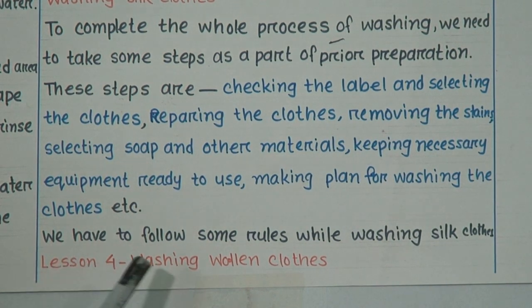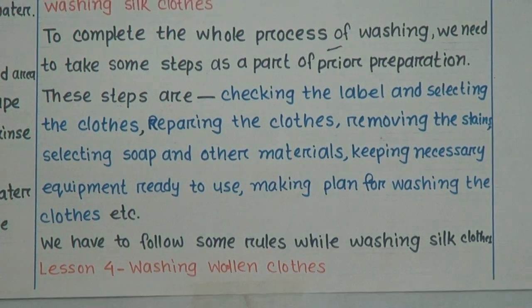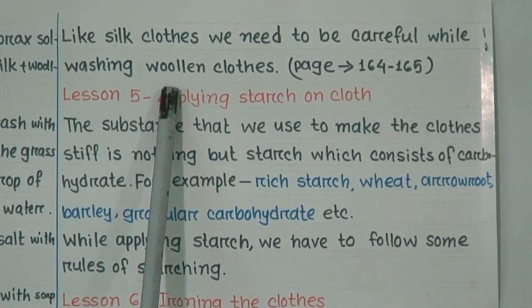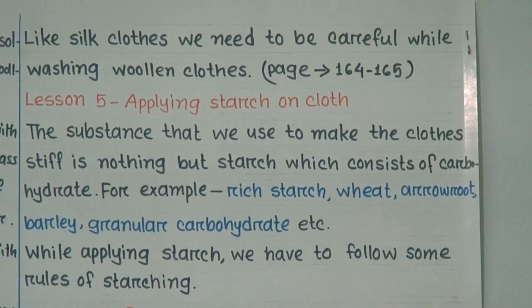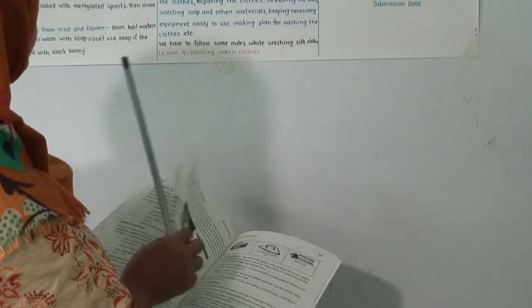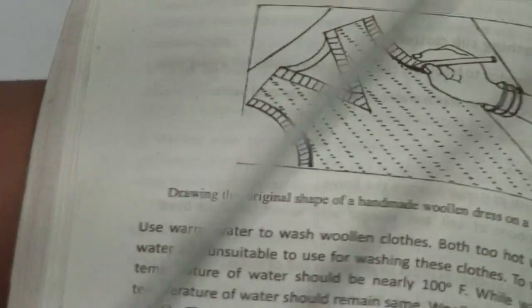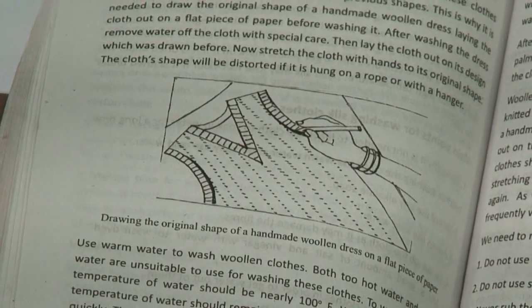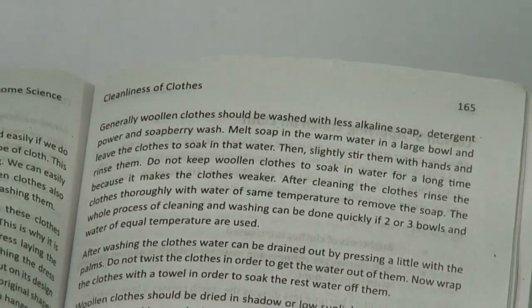Lesson 4: Washing woolen cloths. Like silk cloths, we need to be careful while washing woolen cloths. Please open your textbook to page number 164. From pages 164 to 165, you can find Lesson 4 on washing woolen cloths. You have to read the text to learn the ways and rules of washing woolen cloths. Please read this at home.